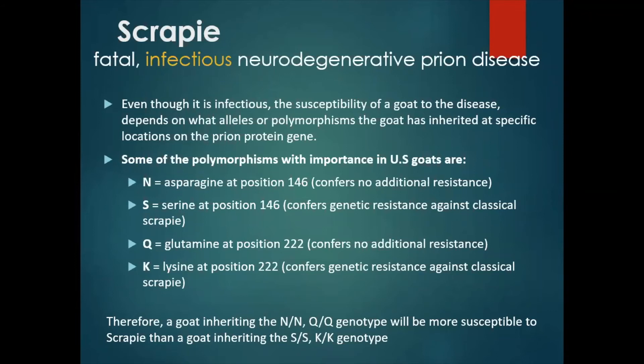We have also figured out a lot of the polymorphisms that affect scrapie susceptibility in sheep. However, these are not necessarily at the same positions or include the same alleles as those with importance in goats.